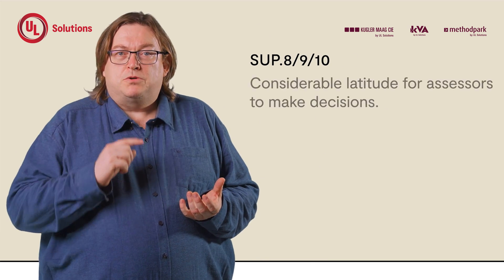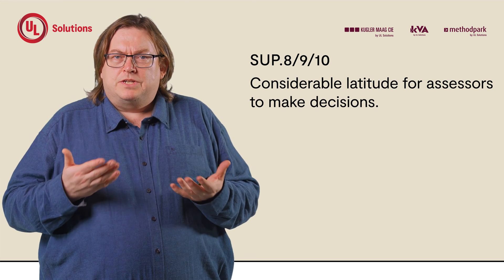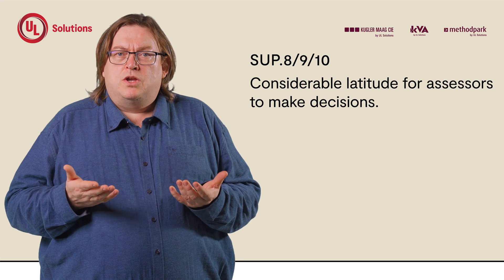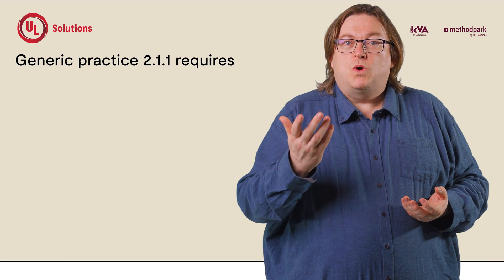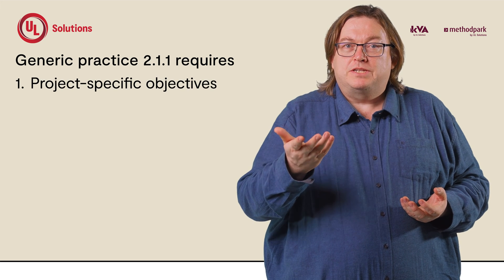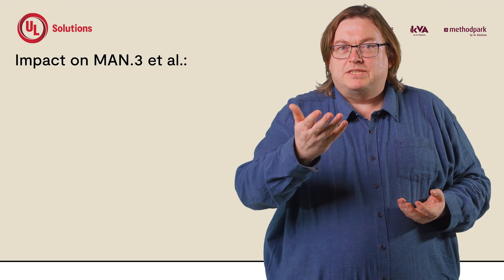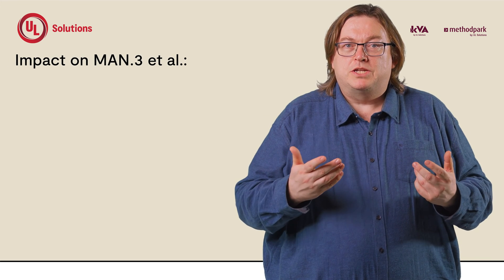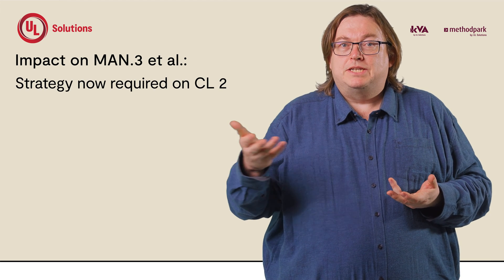For SUB 8, SUB 9, and SUB 10, these processes no longer require a strategy, and this may lead to more significant decision-making leeway for assessors in determining what is needed. As mentioned before, Generic Practice 2.1.1 no longer only requires project-specific objectives, but also a performance strategy. So processes like MAN 3 project management, which did not require a strategy before, now need one at Capability Level 2.